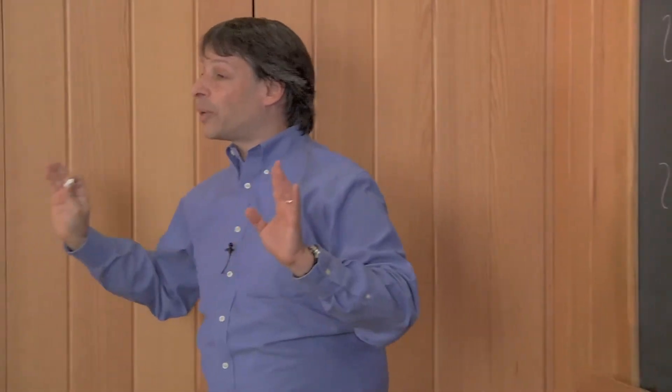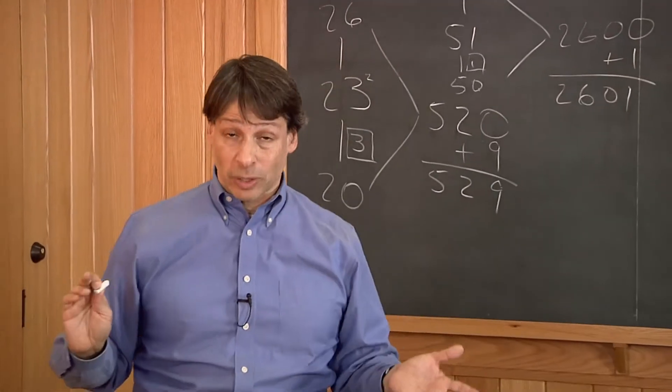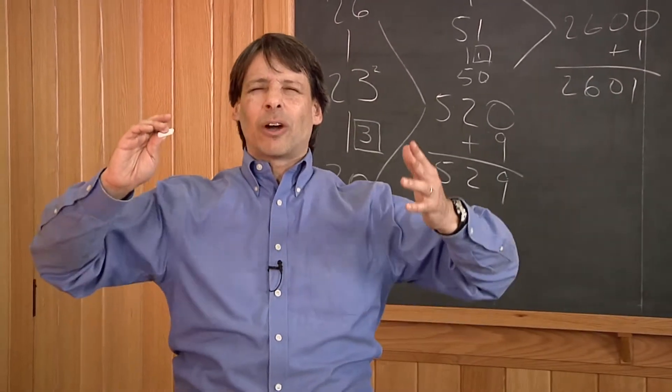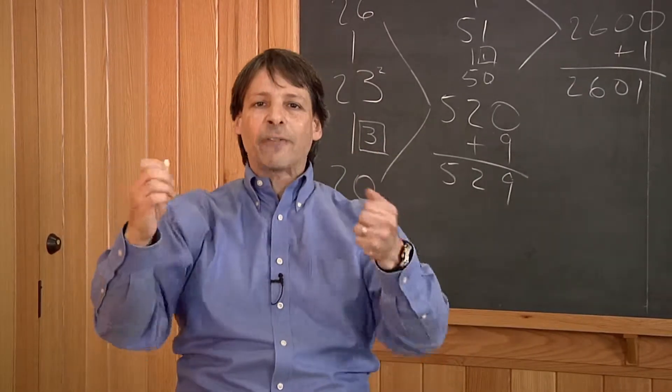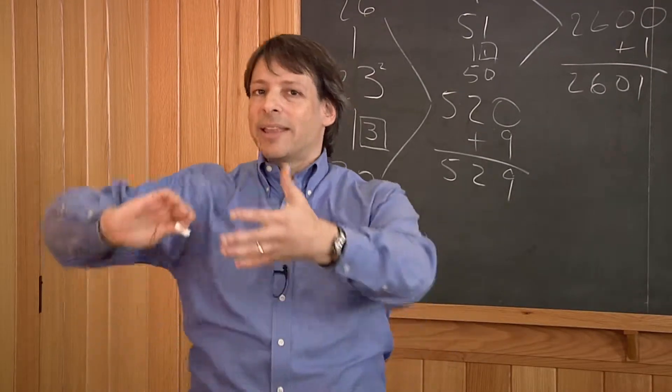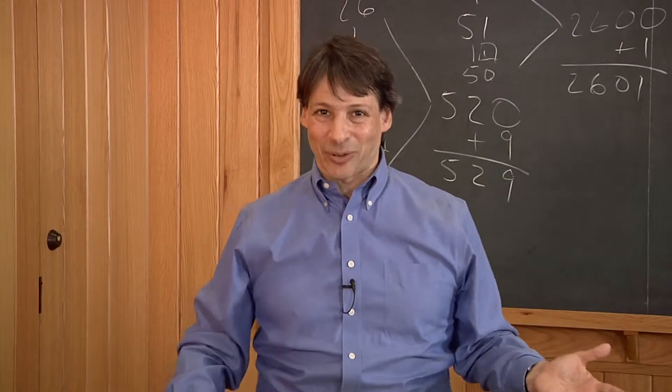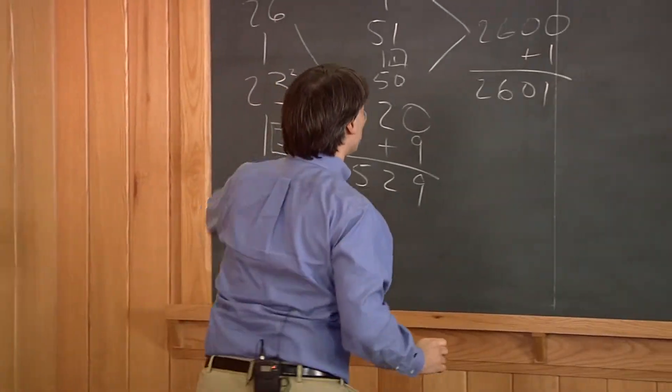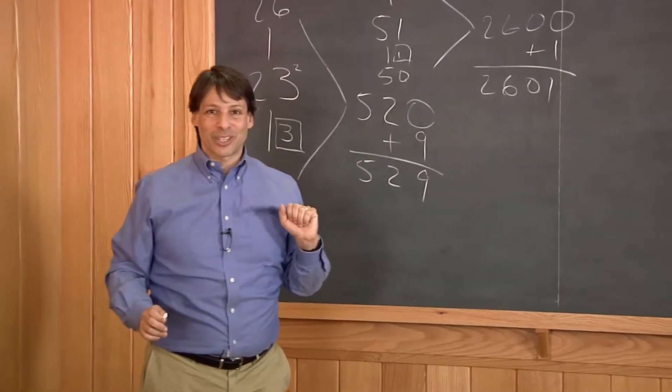By the way, there was another way we could have done the 50 times 52 problem. We could take advantage of the fact that 50 is half of 100. And so if I do 50 times 52, I can take half of 52, which is 26, then multiply that by 100 to get 2,600. Either way, we reduce to 2,600 plus 1, which is 2,601.